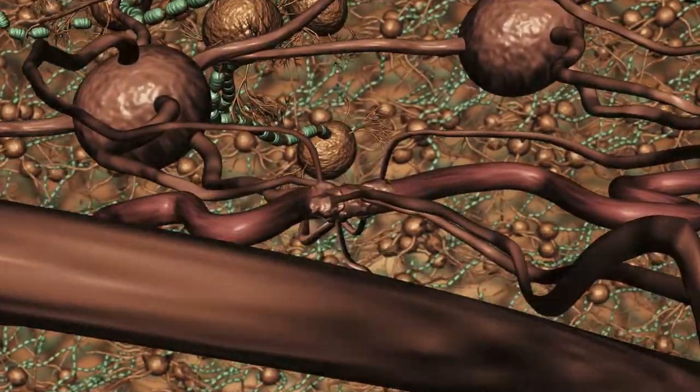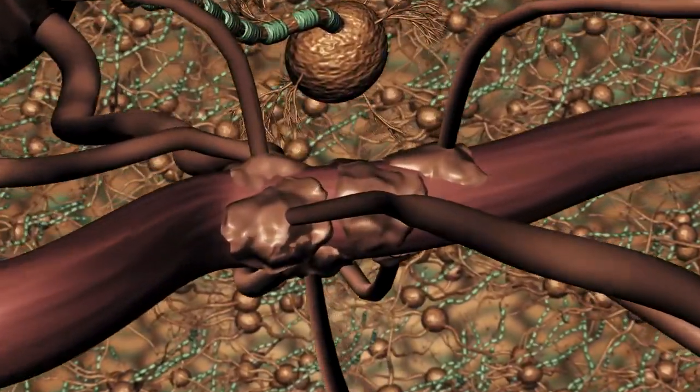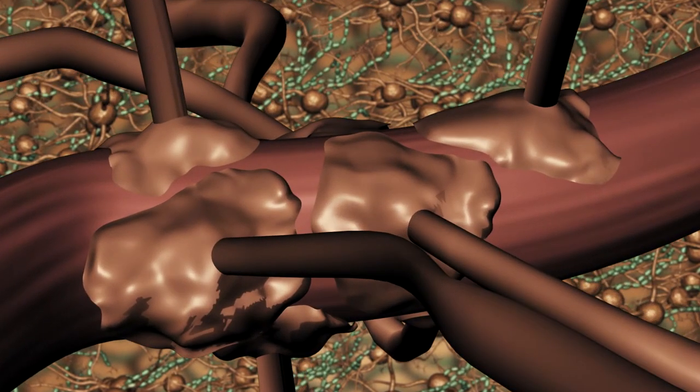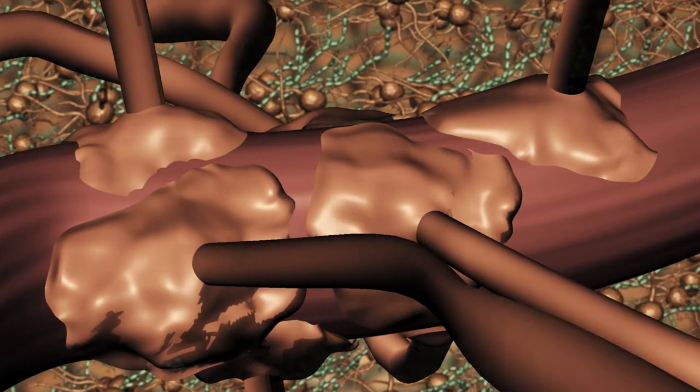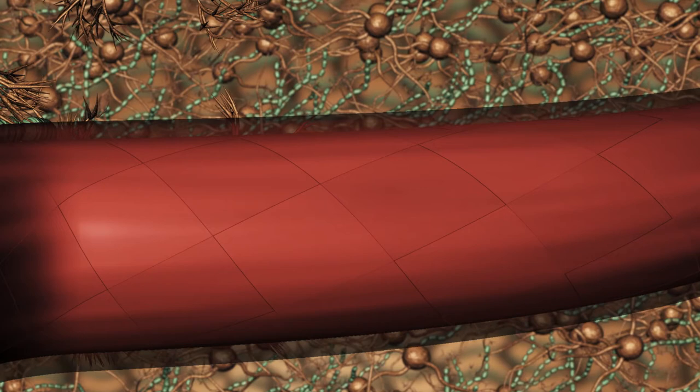To prevent penetration of dangerous substances into the brain, blood vessels are coated with a special protective layer.